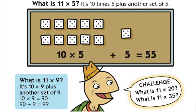What is 11 times 9? Well, it's 10 times 9 which is 90, plus add one more set. So add 9 more and I get 99.